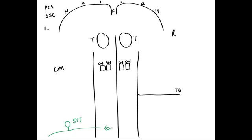This secondary neuron then crosses the midline at approximately the level it entered the cord. The primary neuron may pass in and go up the cord a couple of segments before synapsing, but in principle the spinothalamic enters the spinal cord and crosses over. Once it's crossed over, it ascends up the spinal cord within the spinothalamic tract until it gets to the thalamus. At the thalamus — specifically the ventroposterolateral nucleus — it forms a synapse with the third neuron, which then projects to the somatosensory cortex within the post-central gyrus.